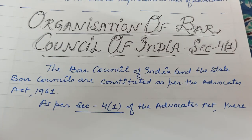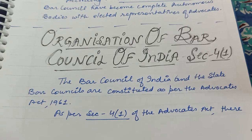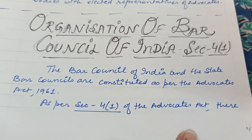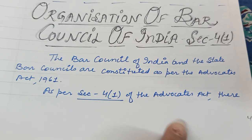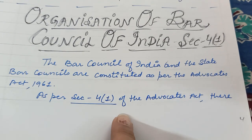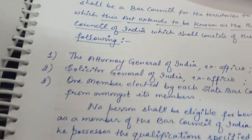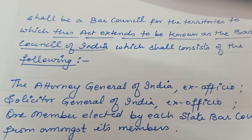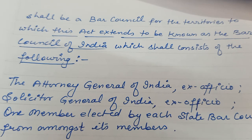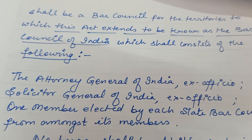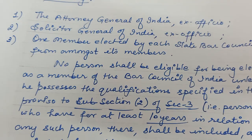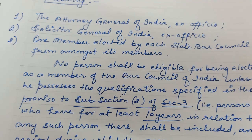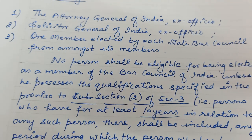Organization of Bar Council of India: Section 4, sub-clause 1 of the Advocates Act states that there shall be a bar council for the territories to which this act extends, to be known as the Bar Council of India. Har territory mein ek State Bar Council banega. The BCI shall consist of: first, the Attorney General of India, ex officio; second, the Solicitor General of India, ex officio.